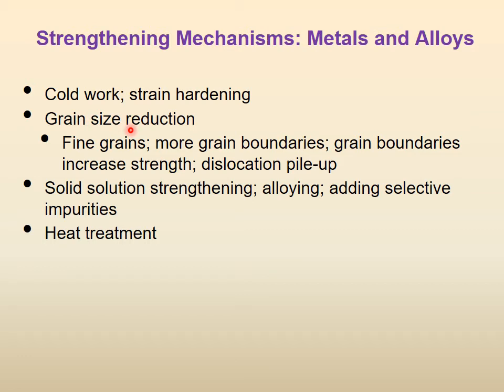The second method is grain size reduction. If grain size is small, the strength will be higher. If grain size is fine, there will be more grain boundaries. Every metal is generally polycrystalline — those crystals grow and form grains. Fine grains mean more grain boundaries, and grain boundaries increase the strength, which we explain in terms of dislocation movement and dislocation pileup.